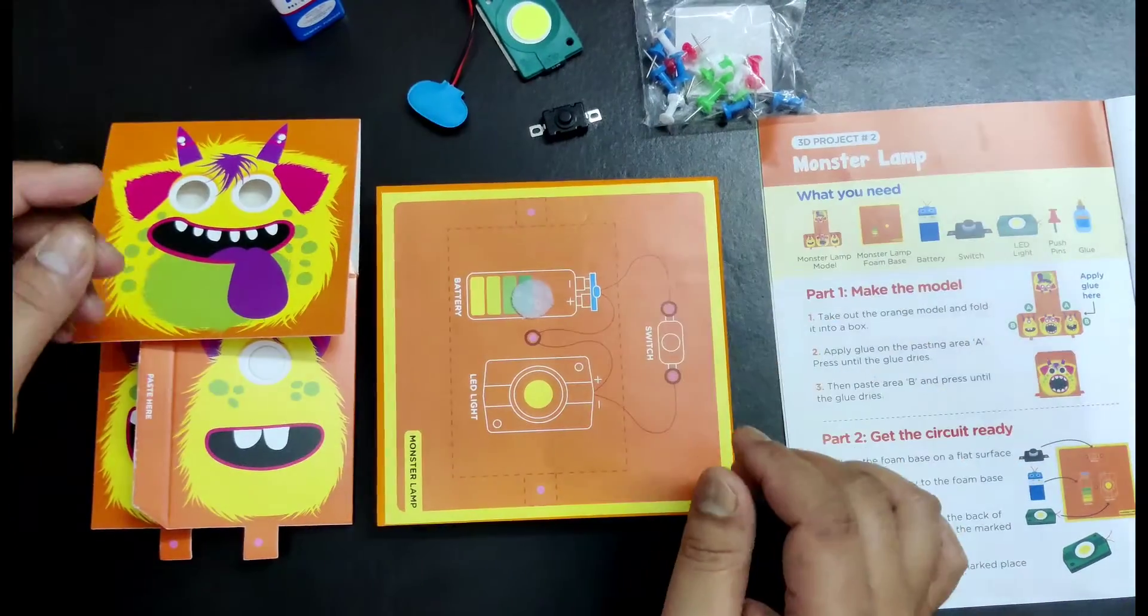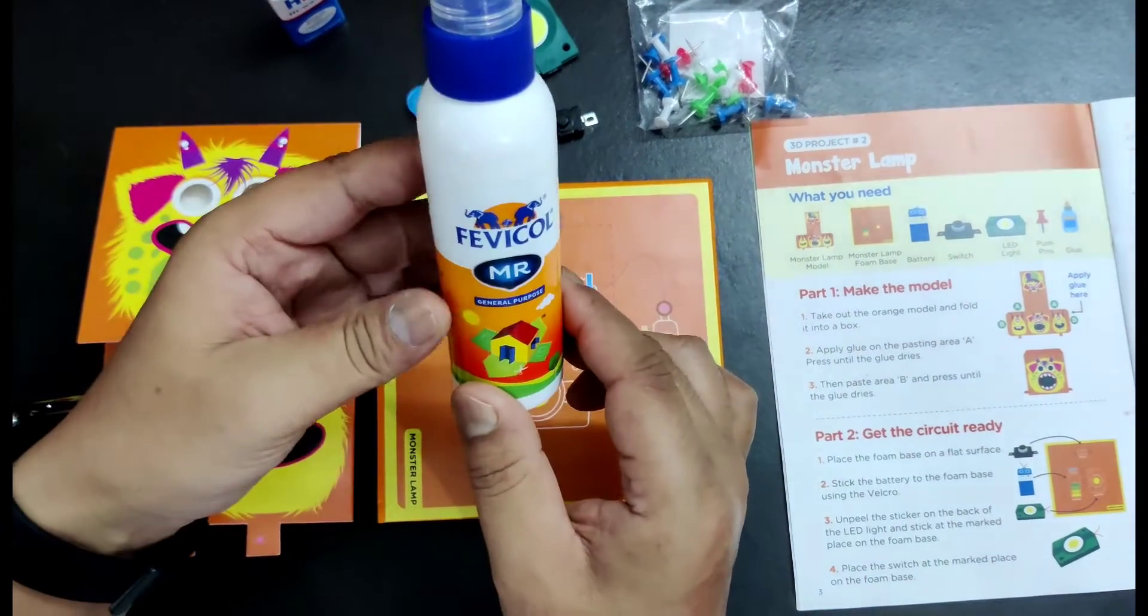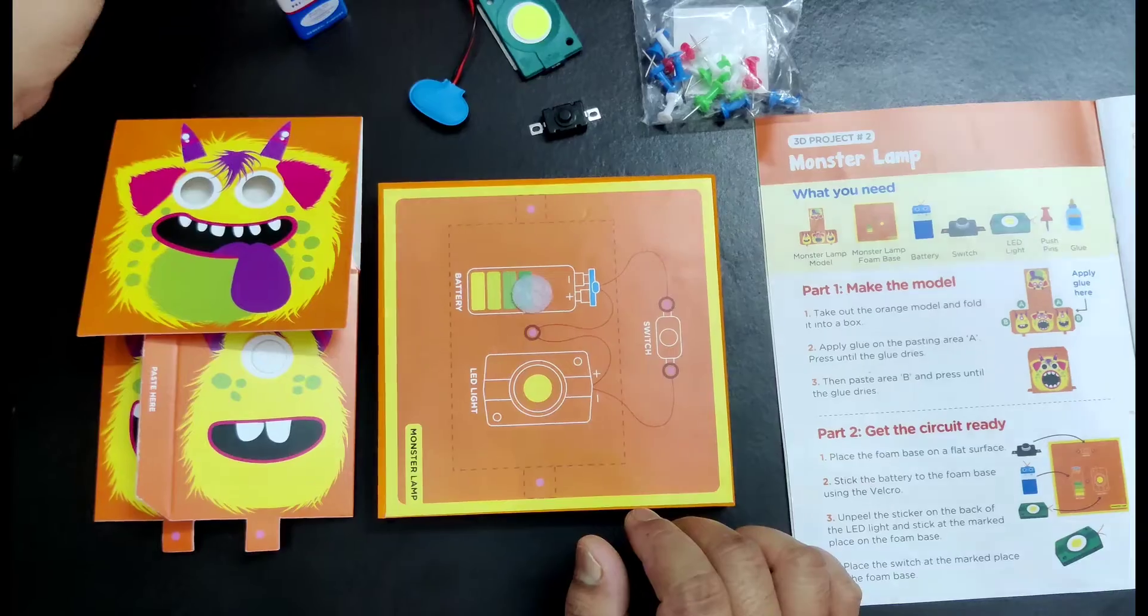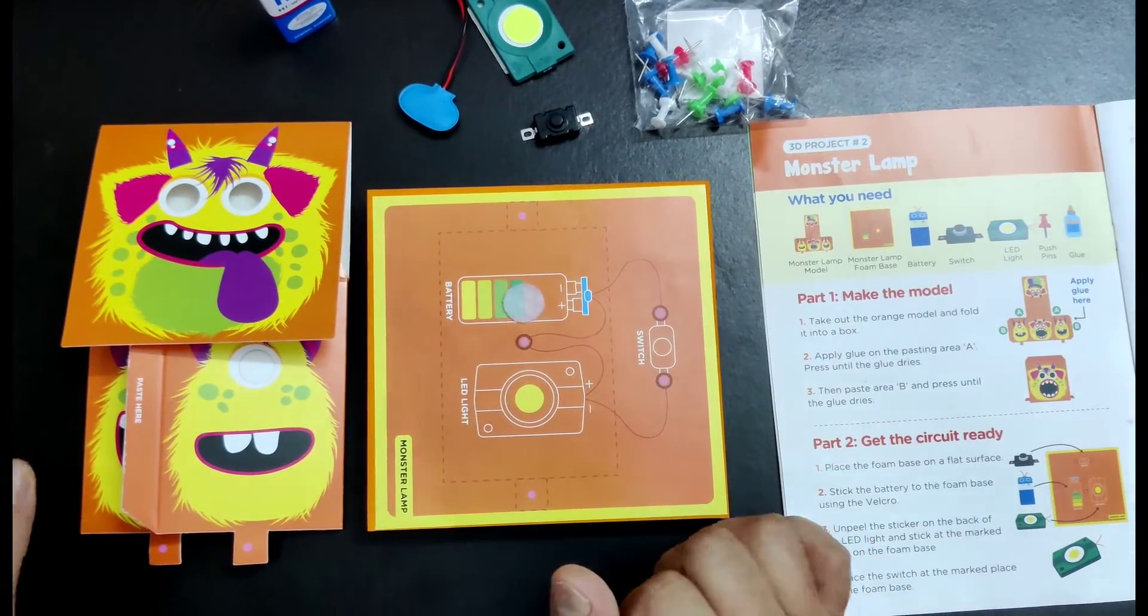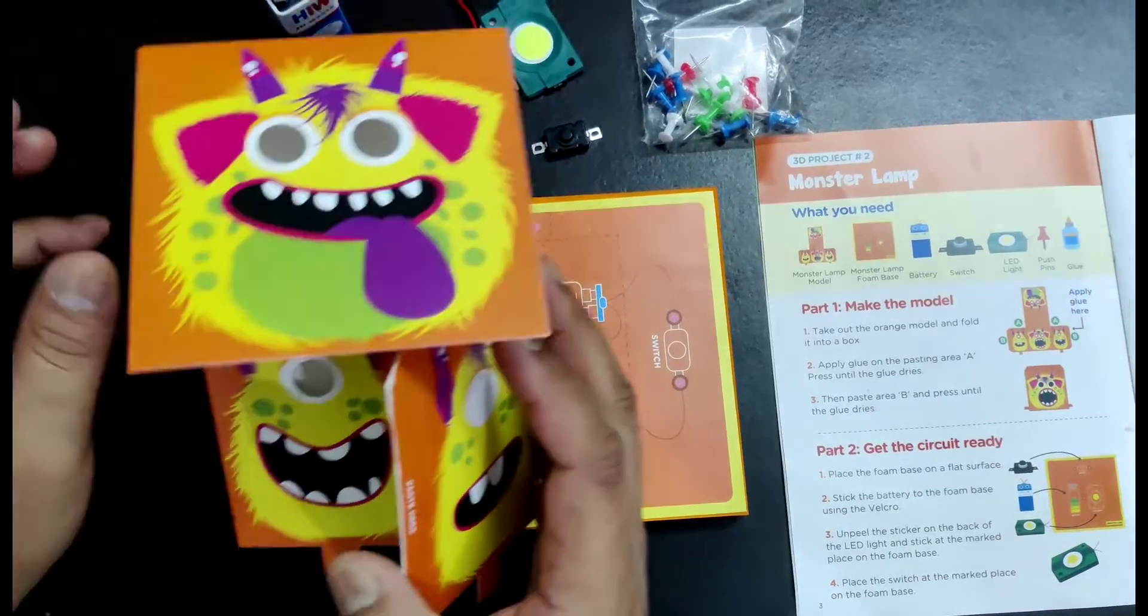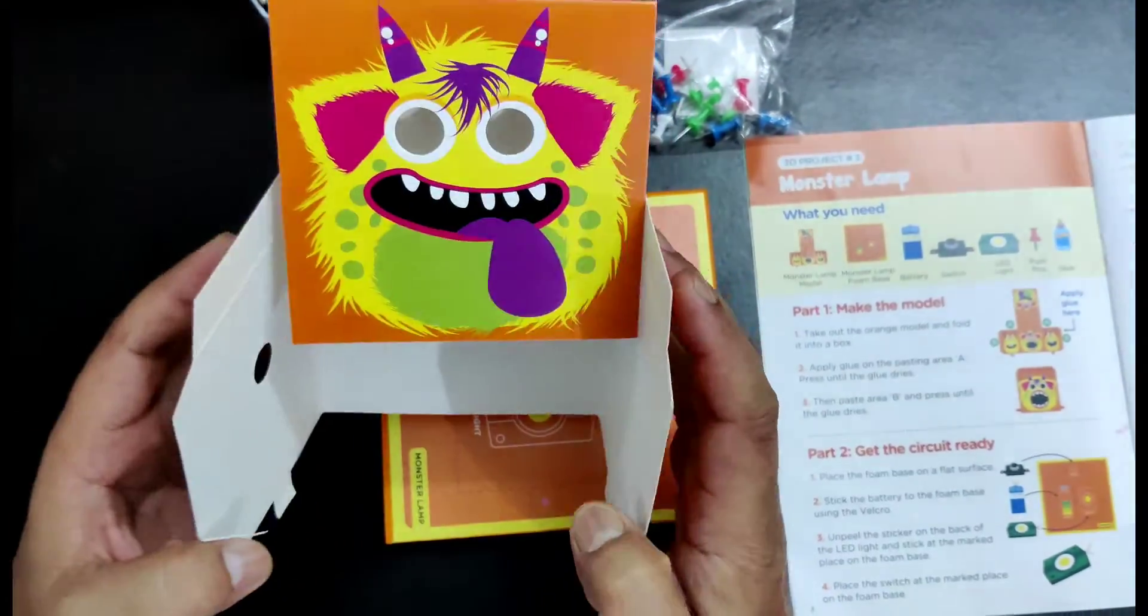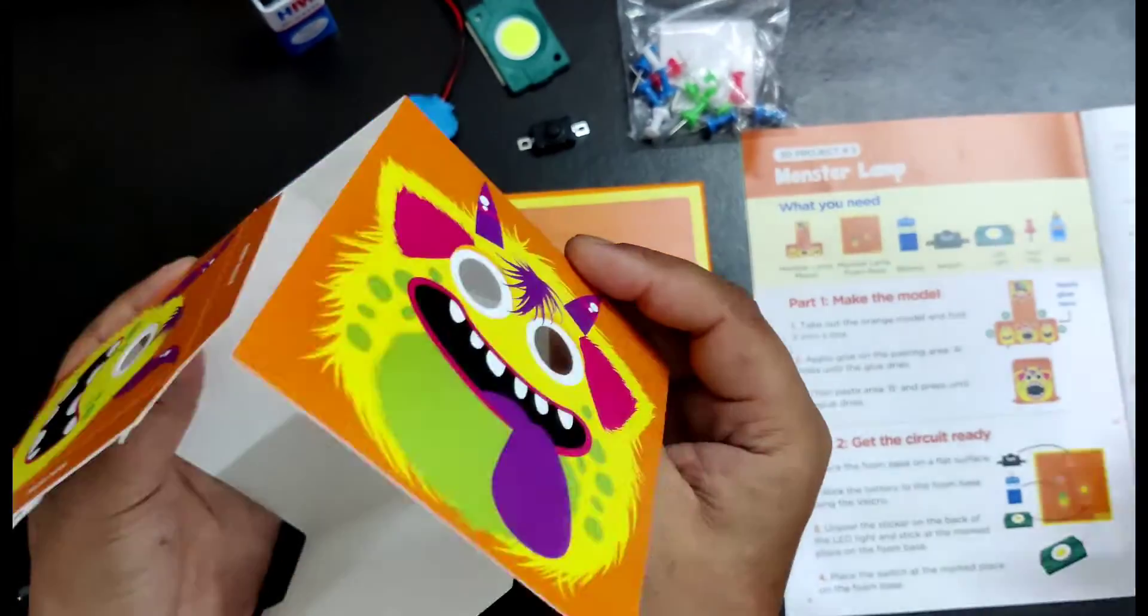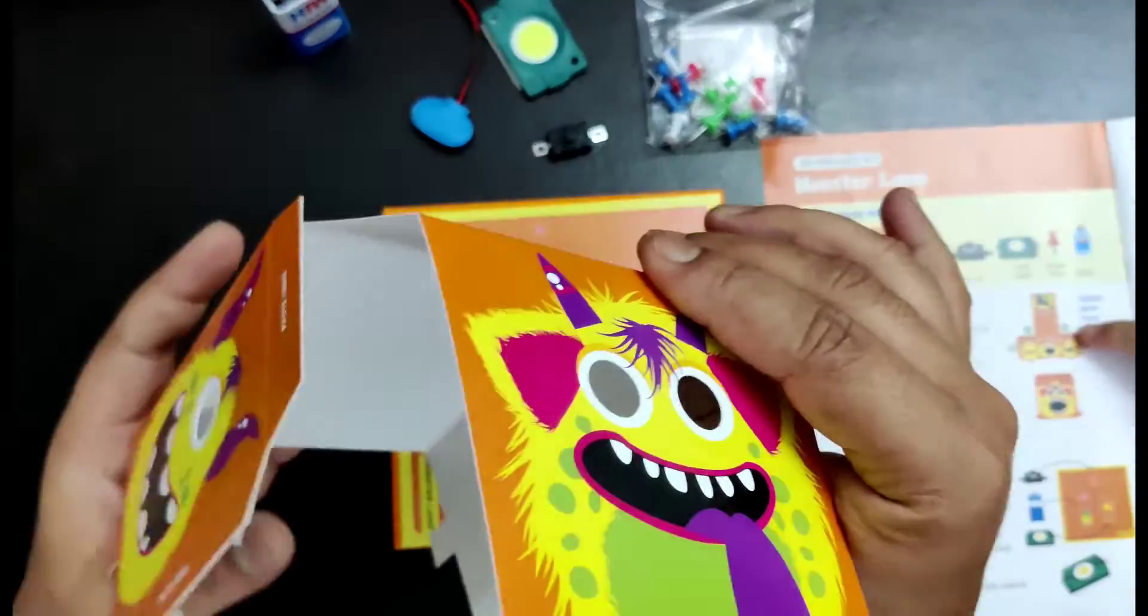Don't forget the glue. Here is our glue. So now first we have to take out the model and we need to fold it into a box. All right, so let's go ahead and try it out.